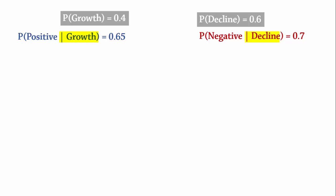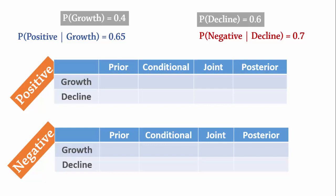To calculate posterior probabilities, we will create tables for the consultant's reports — one for positive and one for negative. The tables have rows representing the outcomes or states of nature. The prior probabilities are 0.4 for growth and 0.6 for decline for both tables.